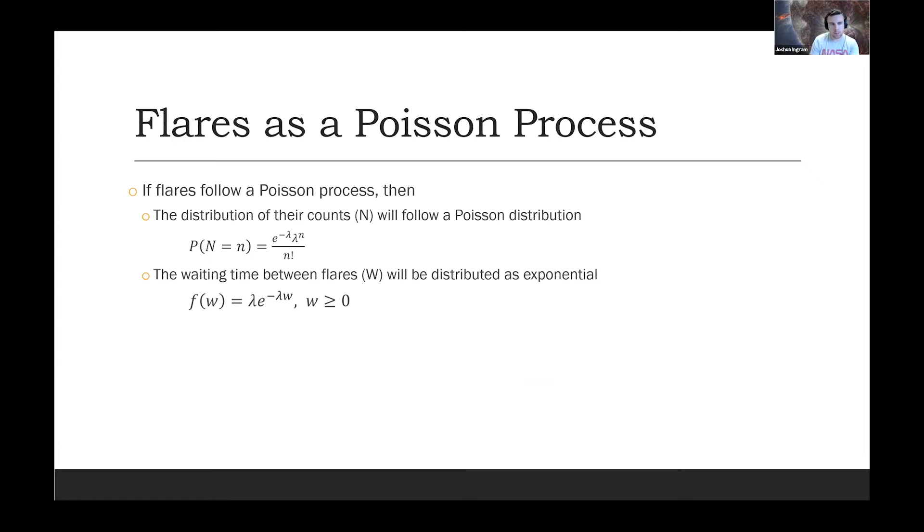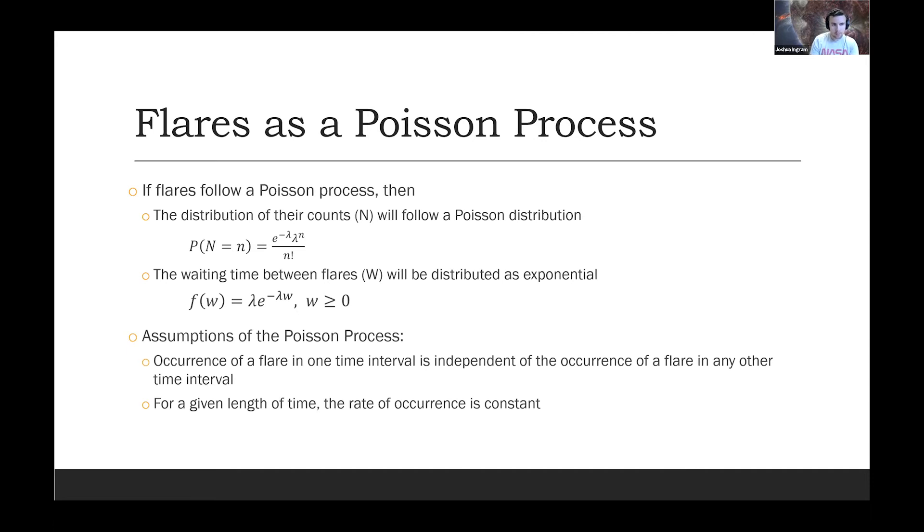We're going to get into modeling flares as a Poisson process. Typically what's done by astronomers is they assume that flares follow Poisson process. This is useful because the Poisson process has many nice properties and there's also a lot of physical models, theoretical physical models, that assume a Poisson process. If flares follow Poisson process, their counts, the number of flares per month, will follow Poisson distribution and their waiting times, the difference between the start time of one flare and the start time of the next flare, will be distributed as exponential. If we have a Poisson process, we have to make several assumptions. One is that the events are independent of each other. So if one flare goes off now, it won't affect the next flare going off. And then at any given time, the rate of occurrence is constant. That rate is what we call Lambda.